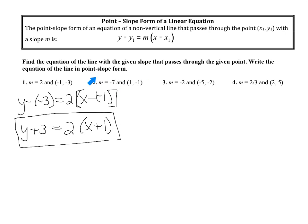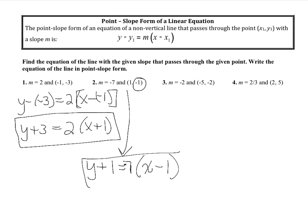For number 2, m equals negative 7 and the ordered pair is (1, -1). Starting with y minus y1: the y-value is negative 1, so y minus negative 1 is really y plus 1. That equals negative 7, and then in parentheses x minus the x-value, which is 1, giving x minus 1. So the form is y plus 1 equals negative 7 times (x minus 1).